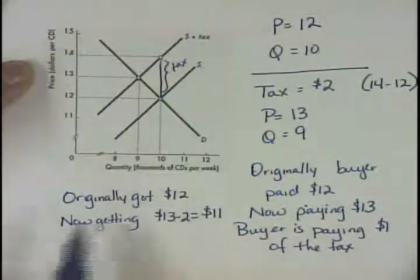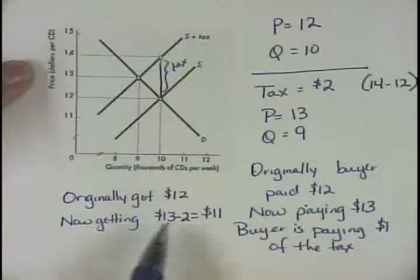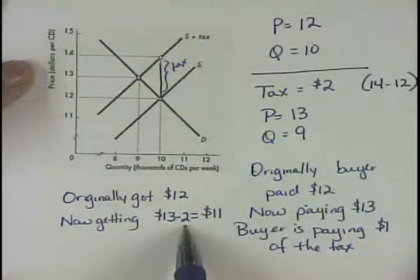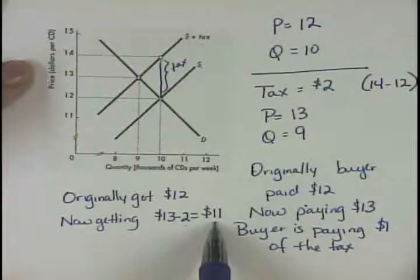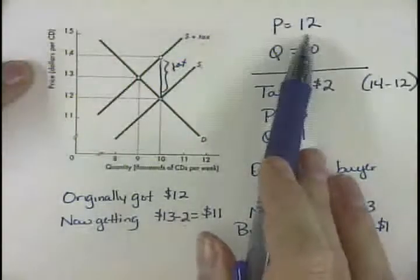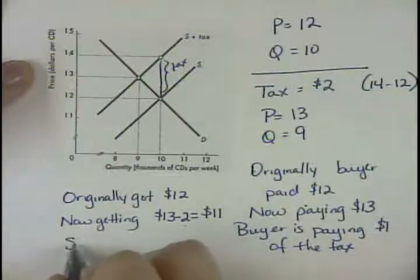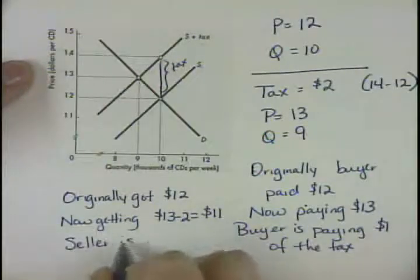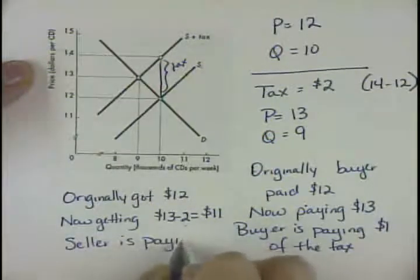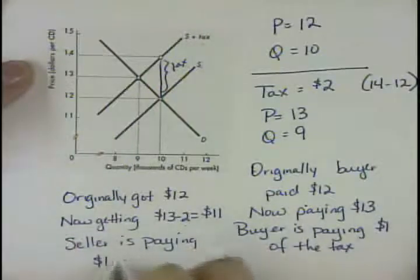So they were getting $12, now they're receiving $13 from the buyer but they're paying $2 in the tax. So they're only really receiving $11. They started at $12, now they're only getting $11 net. So the seller is paying $1 of the tax.